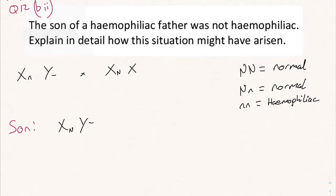You're not actually told anything about the mother — whether she was heterozygous or homozygous dominant. But we should just put two capital N's to be safe, because no matter what, the son will always then be normal. If the mother had a small n there, it would be a 50/50 chance that the son could be hemophiliac. In this case we're told the son was not hemophiliac, and that's our answer.